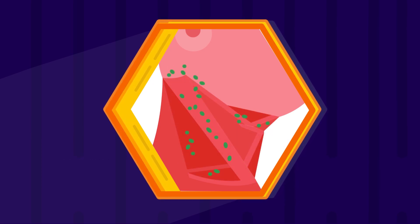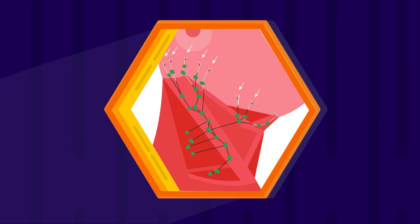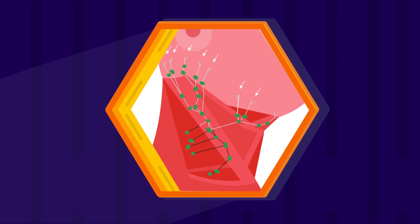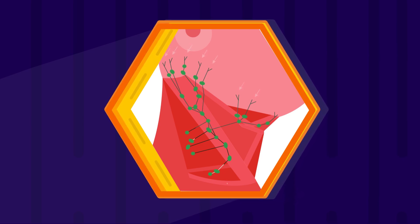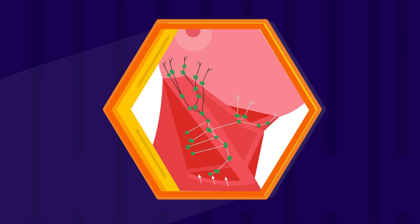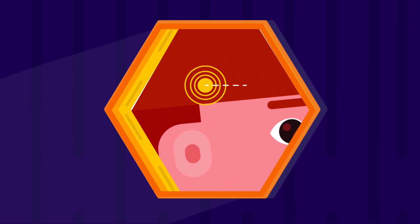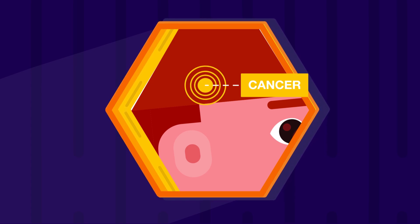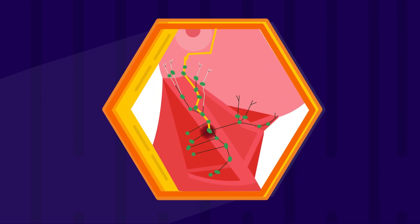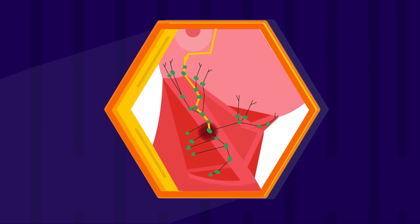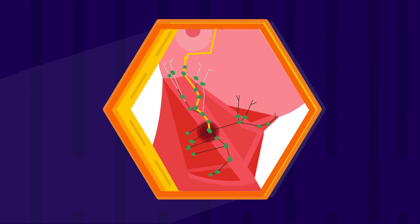It is important to note that lymphatic drainage from the entire head and neck goes into the neck nodes. Sometimes, diseases in the abdomen could also travel to the neck nodes. This means that if there is an infection or cancer, especially in the head region, it can easily lead to lymph node enlargement in the neck. The simplest way to define neck masses is to divide them into midline or lateral neck masses.